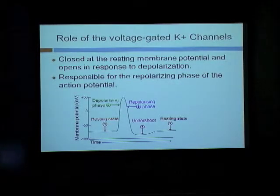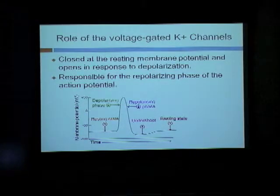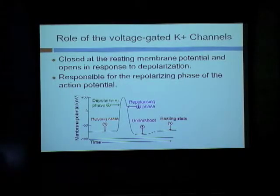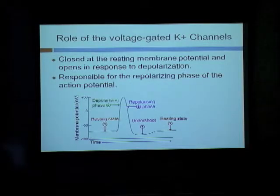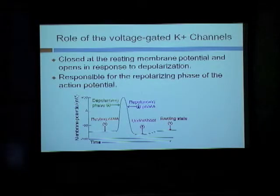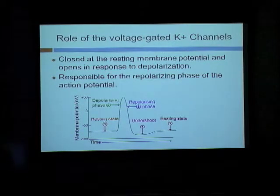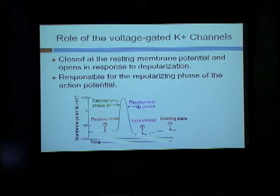Voltage-gated potassium channels are important in generating and propagating electrical impulses in excitable cells like neurons and heart cells. They are closed at resting membrane potential but open in response to depolarization. During the depolarizing phase of the action potential, sodium ions flow into the cell and the membrane potential increases. In response, voltage-gated potassium channels open, potassium flows from inside to outside, and the resting membrane potential is restored.